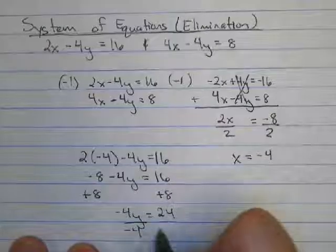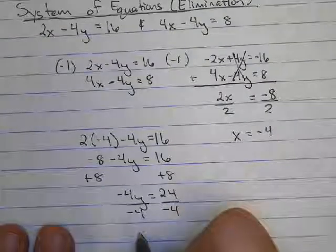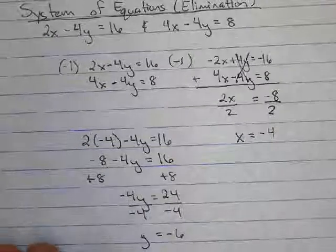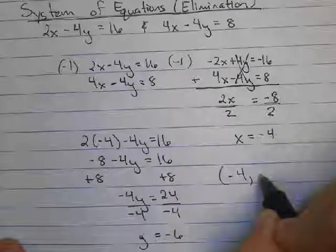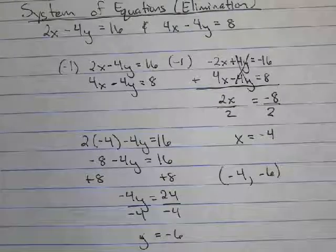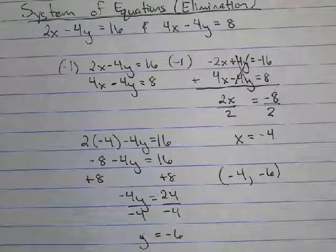Divide by negative 4 and y will equal negative 6. And so we found our solution is the point negative 4 comma negative 6. That's how we can use elimination to help us solve a system of equations.